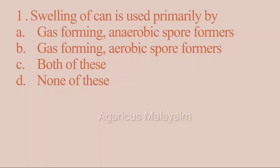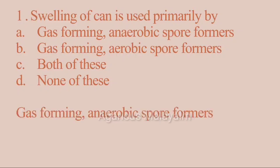First question: swelling of a can is caused primarily by? Option A: gas-forming anaerobic spore formers. Option B: gas-forming anaerobic spore formers. Option C: both of these. Option D: none of these. Correct answer: Option A — gas-forming anaerobic spore formers.